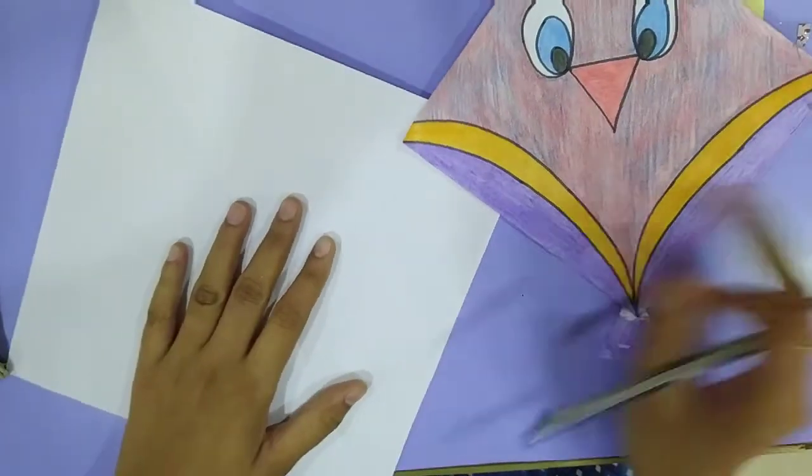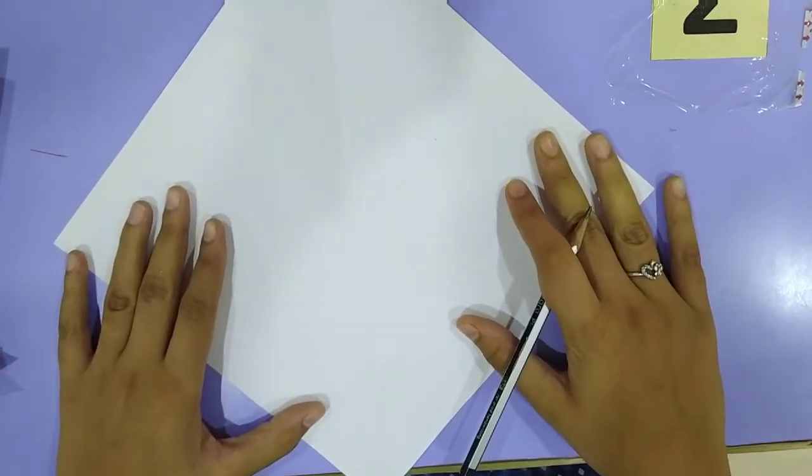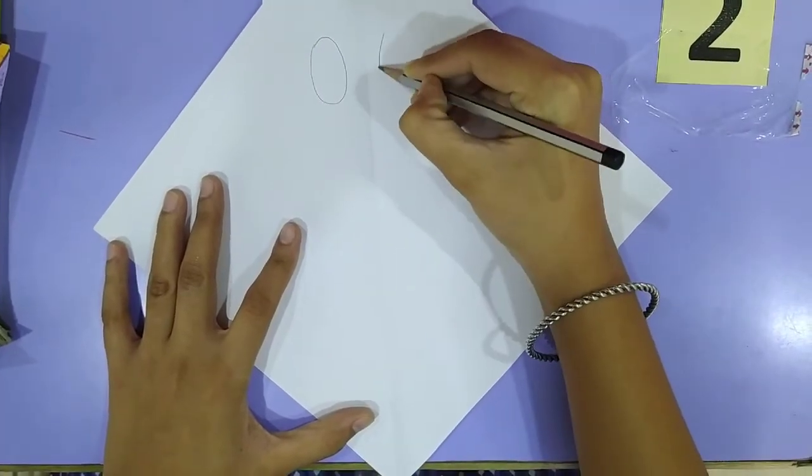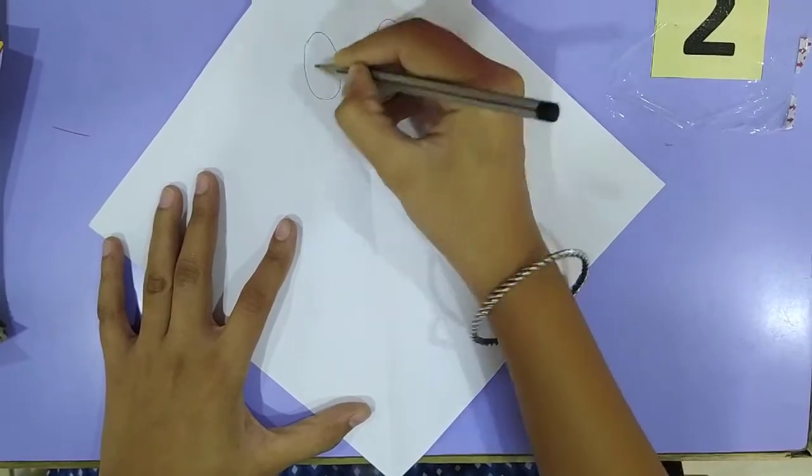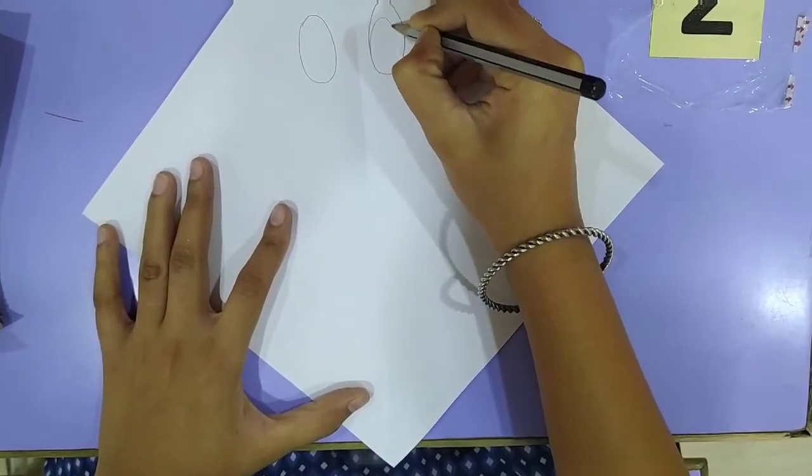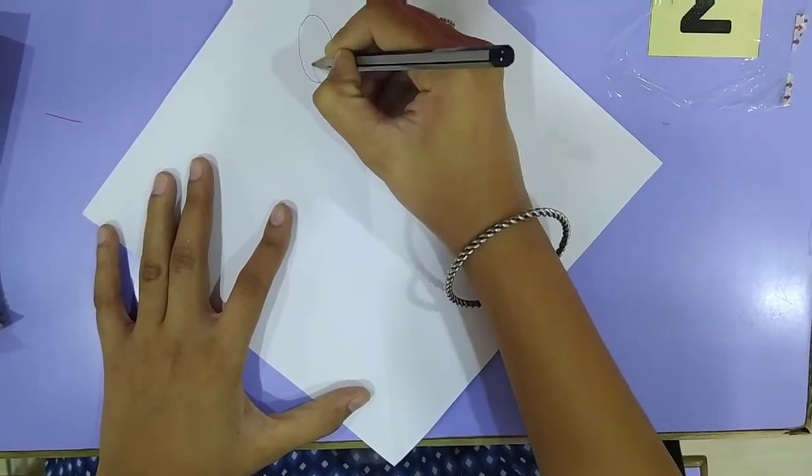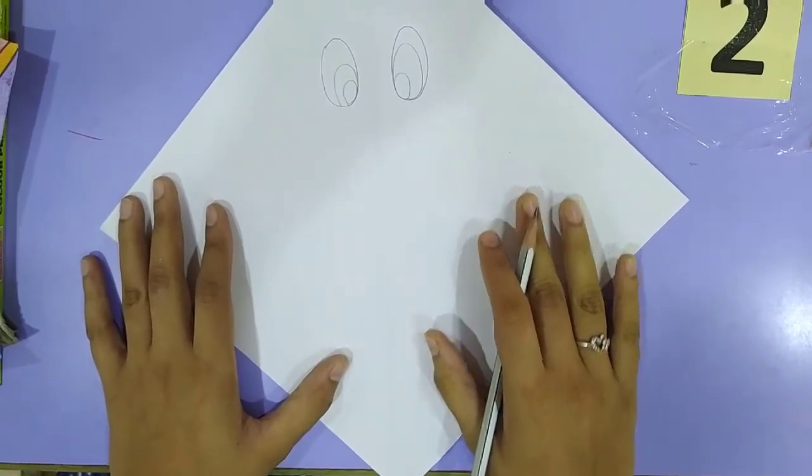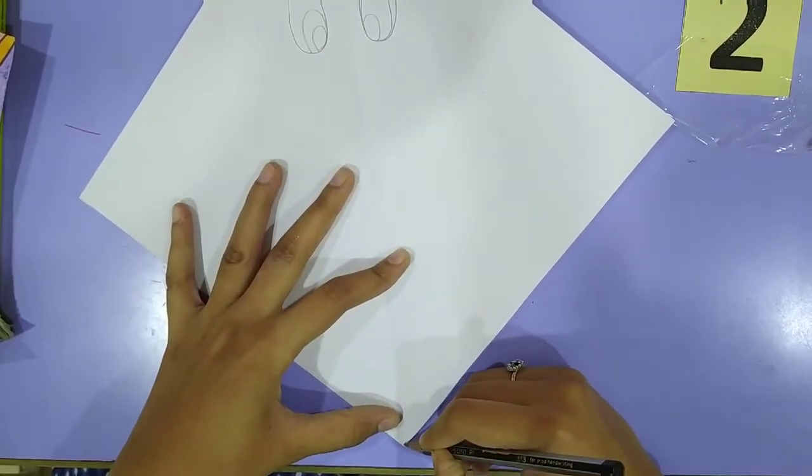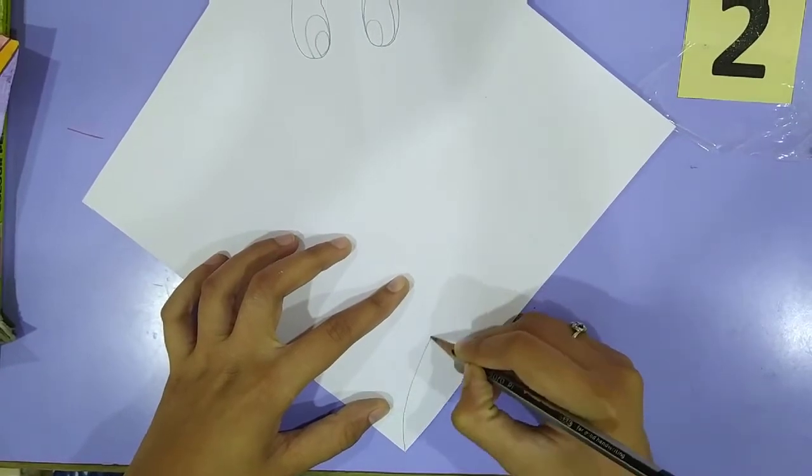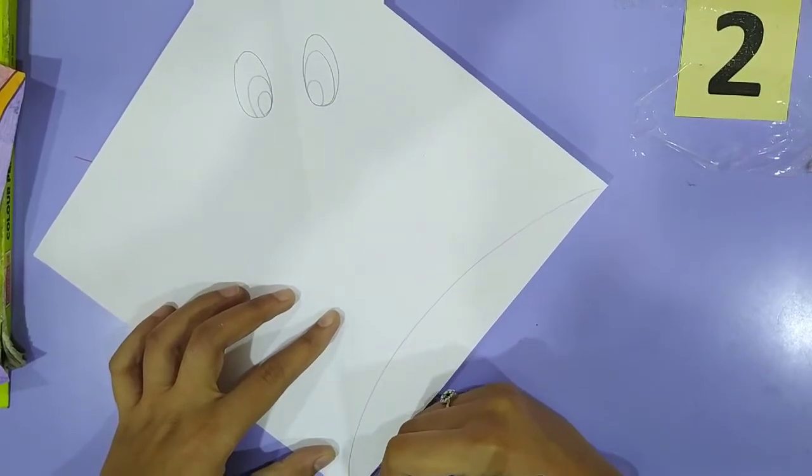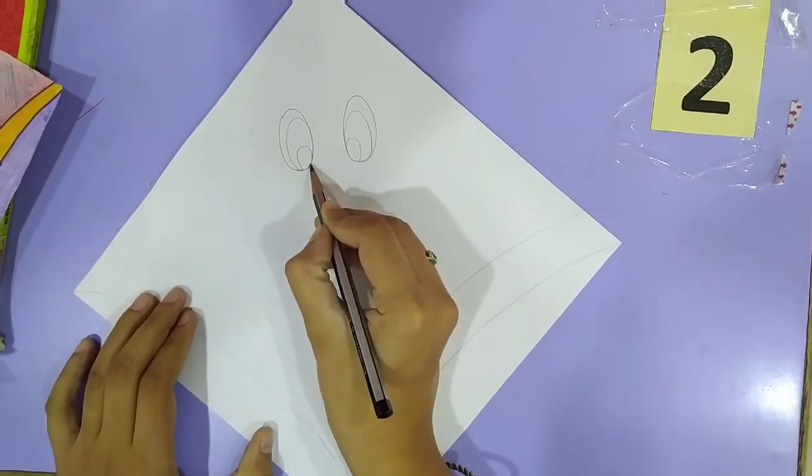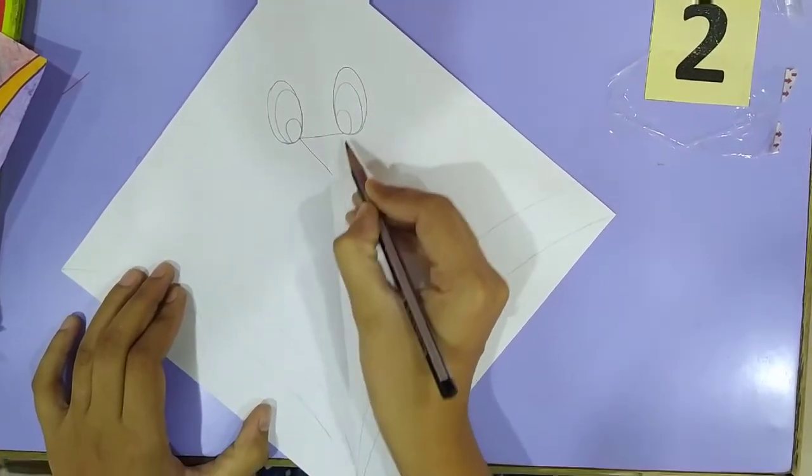So let's start. Now what you are going to do is you are going to keep this paper like this. Now you are going to draw two eyes for that. So two ovals, oval shape. One, two. And the inner eye also you are going to make oval. One, two. This way. So now, let's draw lines. From here, like this. One. And again, from here. Two. And here, we are going to make a triangle, downwards triangle, for its nose.